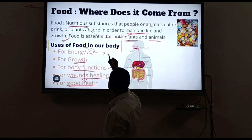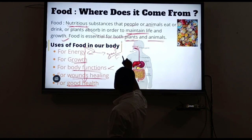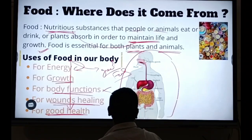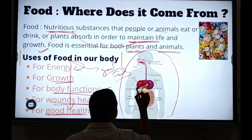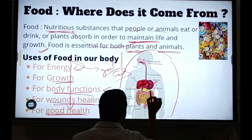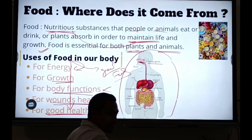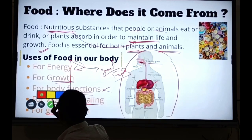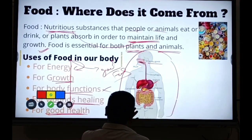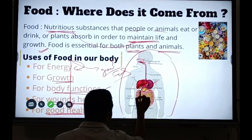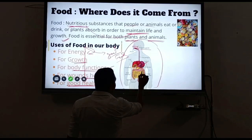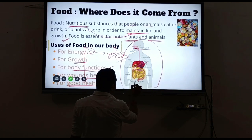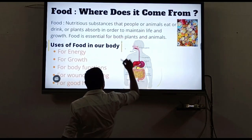For good health, you need good food. Looking at the digestive system, there are many parts: salivary glands, mouth, liver, stomach, pancreas - which is shaped like a leaf - gallbladder, small intestine, large intestine, and appendix. This is the human body's digestive system.